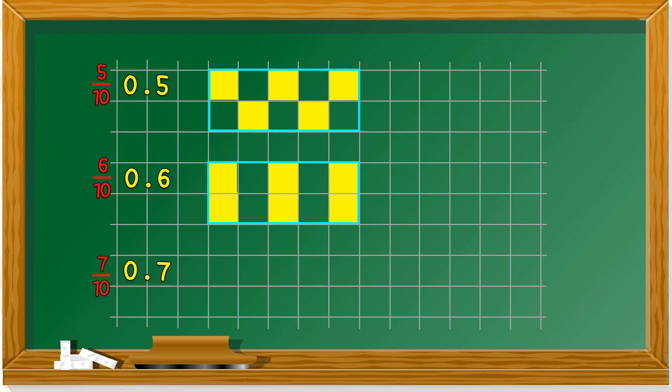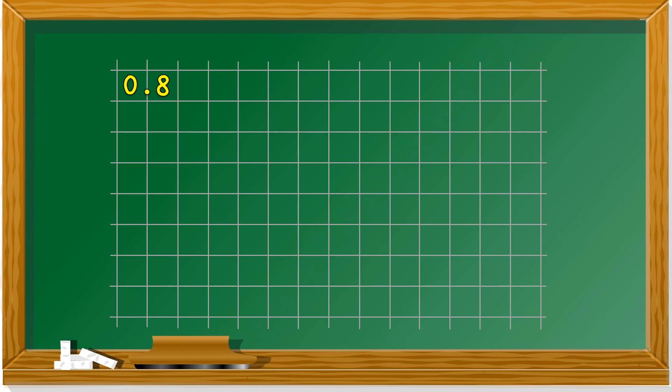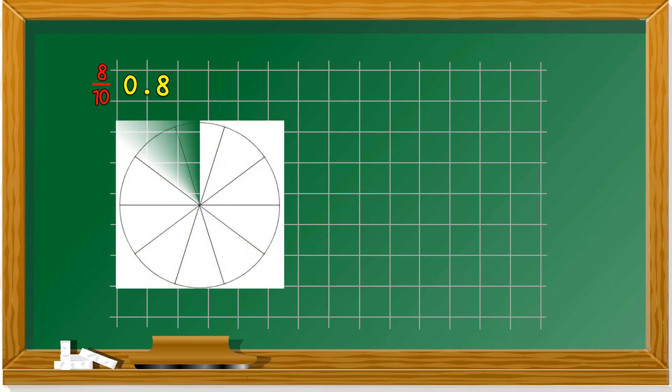0.7, the fraction is 7 over 10. So out of 10 parts, you color 7. Next, 0.8, the fraction is 8 over 10. We can also use the round diagram, but it's harder because you have to divide the parts equally. It's a bit difficult because when you draw, you need to divide 10 parts equally. There are 10 parts. How many parts you have to color? 8.